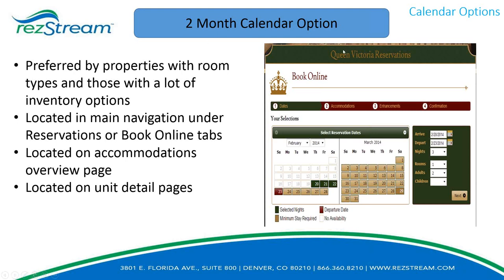Similar to the previous slide, where you want to put access to this two-month calendar would be in the main navigation, on the accommodations overview page, and on the individual unit detail pages. Those calls to action are how you're going to make money—let guests see those options at every step as they work through the flow of your website to be able to make a purchase decision.